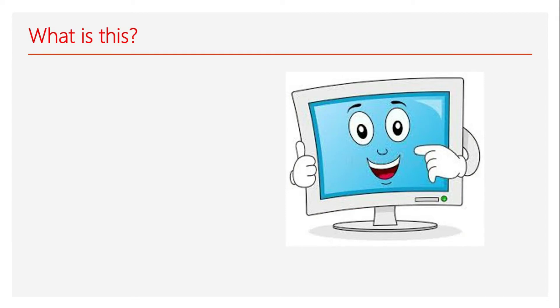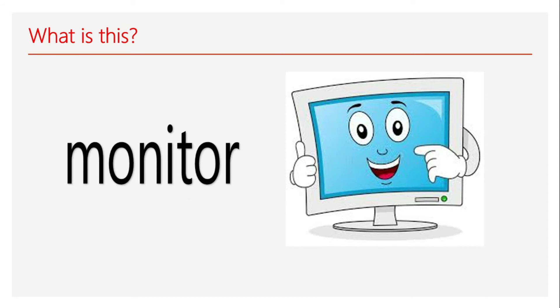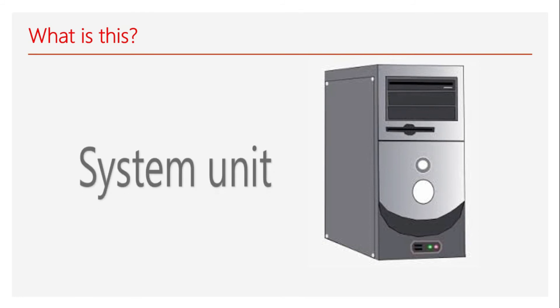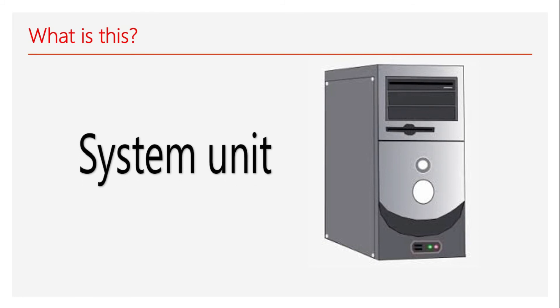Okay, what is this again? Try to remember. What is this? Monitor — excellent! This is what? Monitor. Try to say it, repeat it. And what is this? I say this is the brain of the computer. What is its name? System unit — excellent!